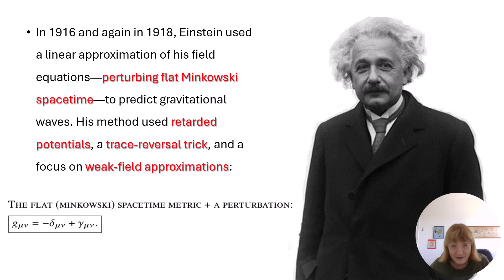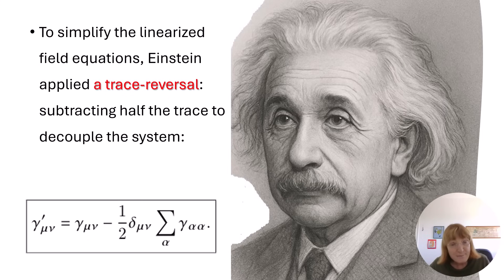His method used retarded potentials, a trace-reversal trick, and a focus on weak field approximations. To simplify the linearized field equations, Einstein applied a trace reversal, subtracting half the trace to decouple the system.